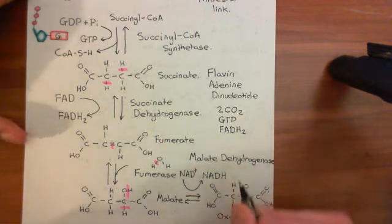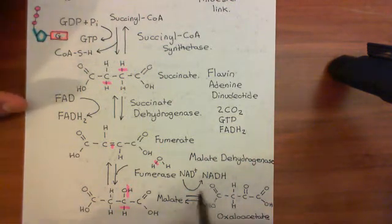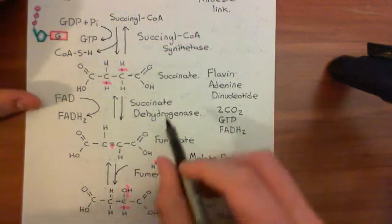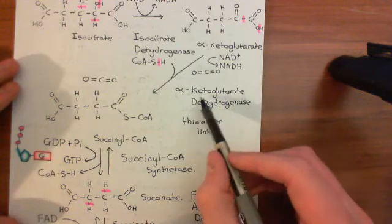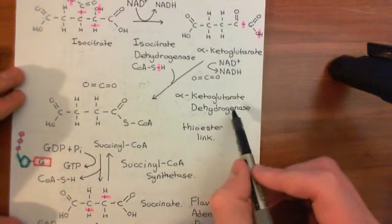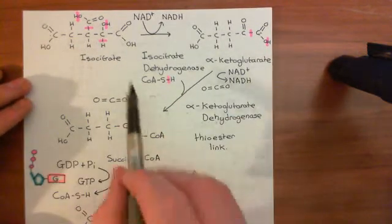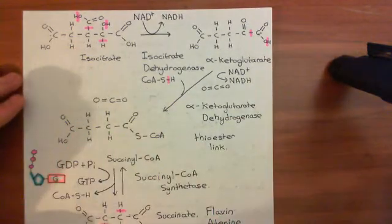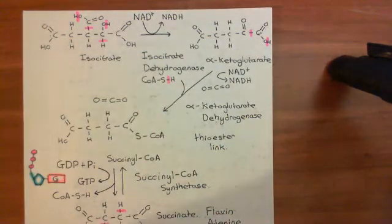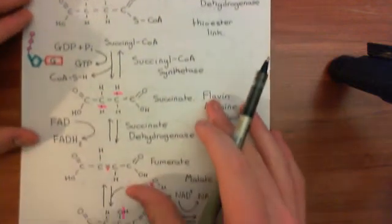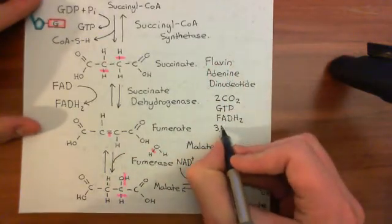And how many NADH molecules did we produce? Well, there's one here, produced by malate dehydrogenase. Then we'll work our way back. We also produced one via alpha-ketoglutarate dehydrogenase, and also from isocitrate dehydrogenase. We didn't produce any before that, because before that it was just aconitase, which was changing citric acid into isocitric acid. So we also produced three molecules of reduced NAD.